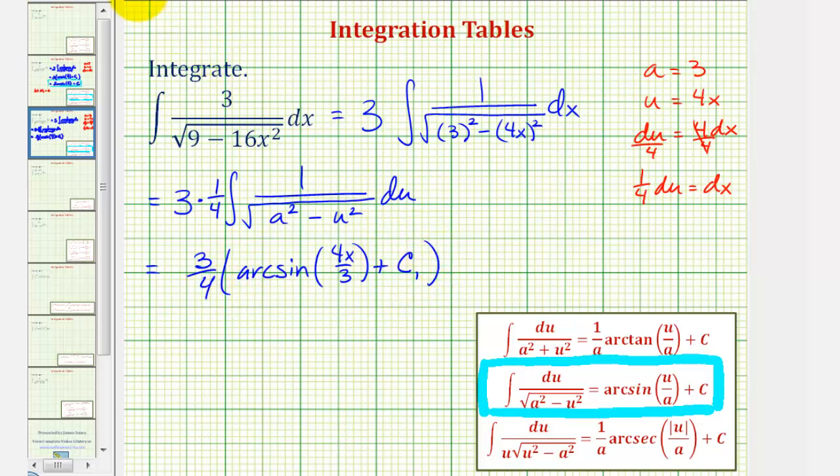And now let's go ahead and distribute. So the final antiderivative would be three-fourths arcsine of four x divided by three. Of course, three-fourths times c sub one would just be another constant. Let's let c equal three-fourths times c sub one, so we can just write plus c.